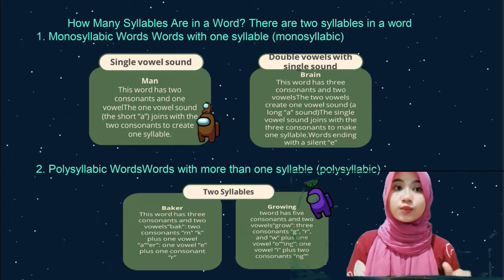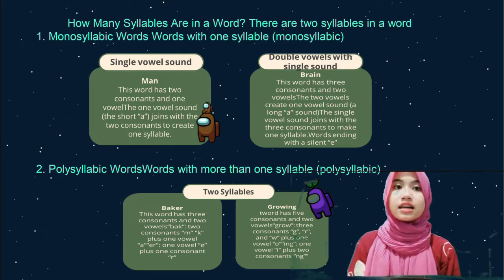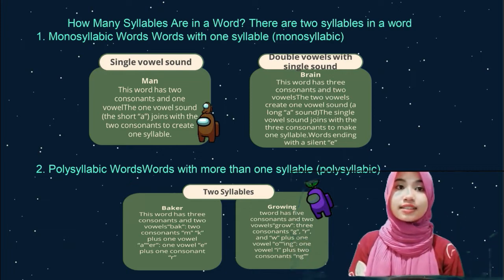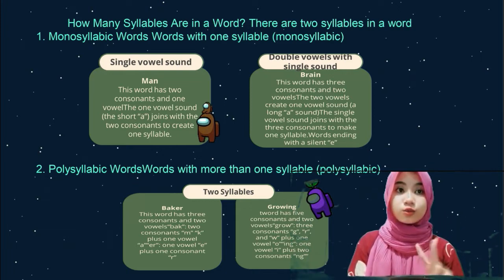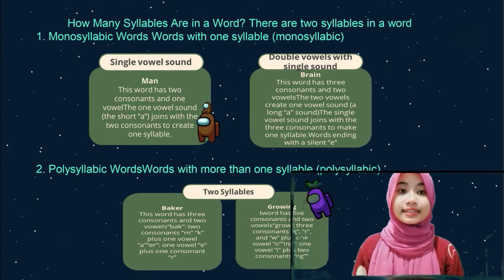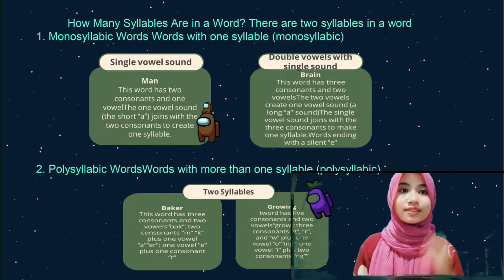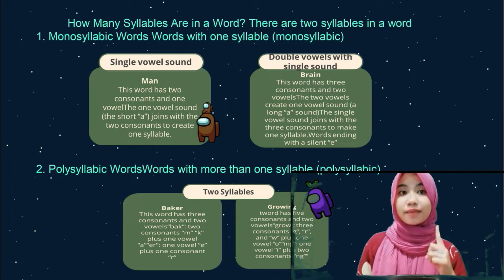Double vowels with a single sound: the word 'brain' has three consonants and two vowels. The two vowels produce one vowel sound — a long A sound. That single vowel sound joins with three consonants to make one syllable.